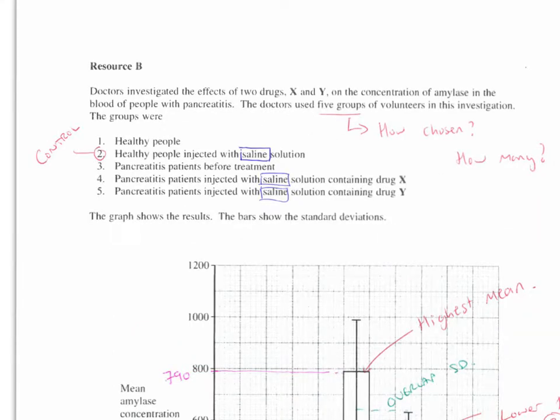There's lots we can analyze from resource B. There are five groups, how are they chosen? They should have been chosen randomly to avoid bias, so it doesn't tell you that in here. Other things to spot as we're going through, it doesn't tell us anywhere how many people are in each group, so we've got no idea of sample size, we don't know if it's representative or not.